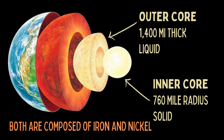The mantle is the thickest layer and it makes up most of Earth's volume. The core is the innermost layer. It includes the outer core, which is liquid, and the inner core, which is solid. The outer core is about 1,400 miles thick and the inner core has a radius of about 760 miles. Both are composed mainly of iron and nickel.